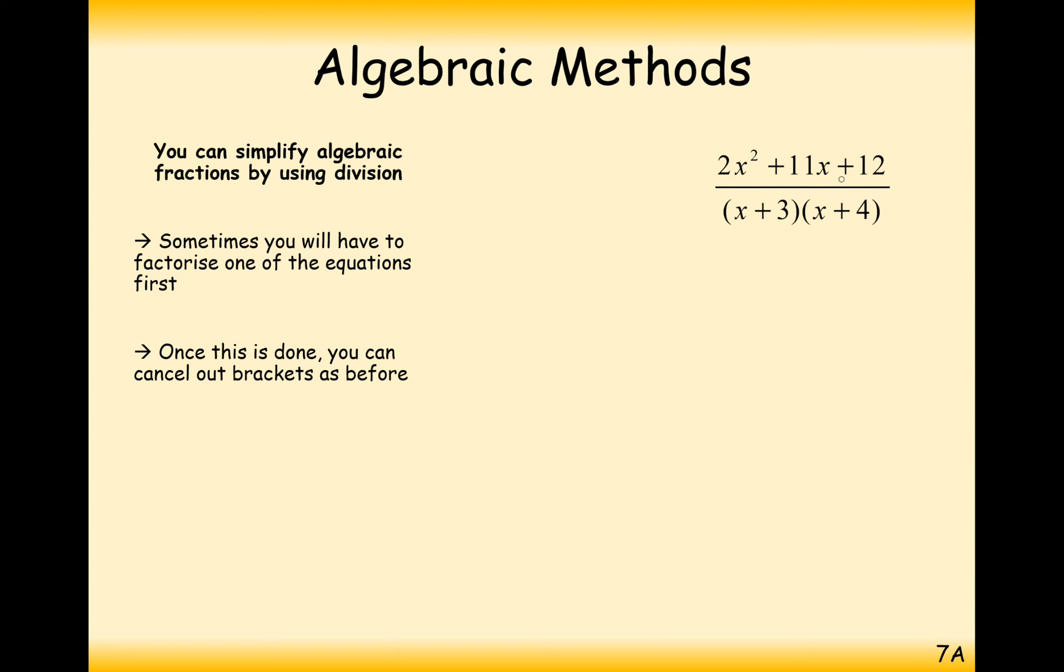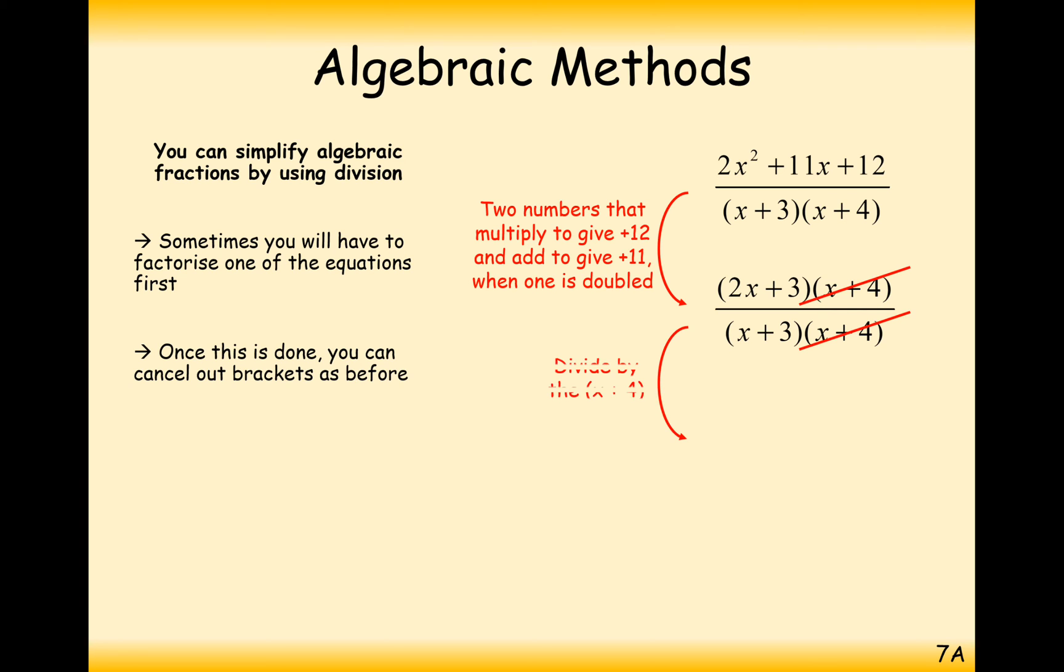A slightly more tricky one here with a 2x² in here. So factorise it as you normally would and you see you've got an x plus 4 on the top and the bottom here. So cancel out the x plus 4s and you get 2x plus 3 over x plus 3. You can't cancel out anything here because although you can see an x plus 3 here, it's not a factor of the top. It's a different factor completely.